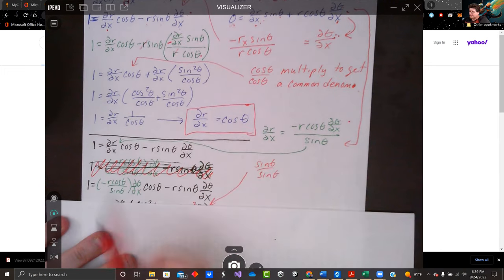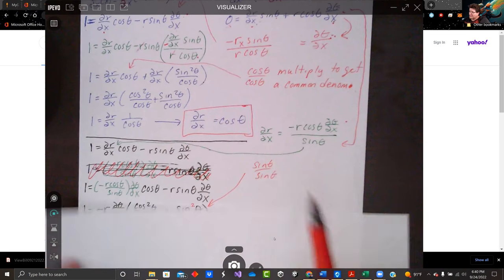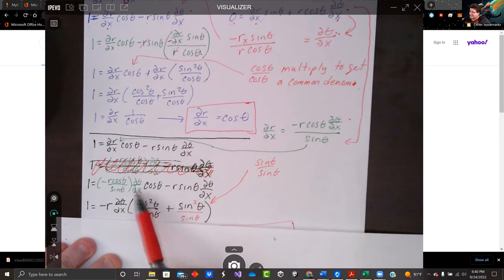And so we just plugged it in. And notice I've got a sine theta on the bottom again. I want to get a common denominator. So I will do that. And I'm factoring out the negative r and the d theta dx.